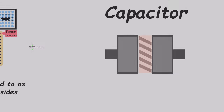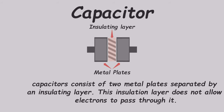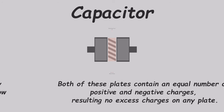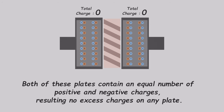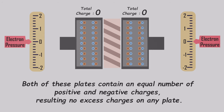Let's turn our attention to the capacitor. It consists of two metal plates separated by an insulating layer that prevents electron flow. Initially, both plates have an equal number of positive and negative charges, resulting in a neutral state with zero total charge. Therefore, the electron pressure on the plates can be seen as zero.